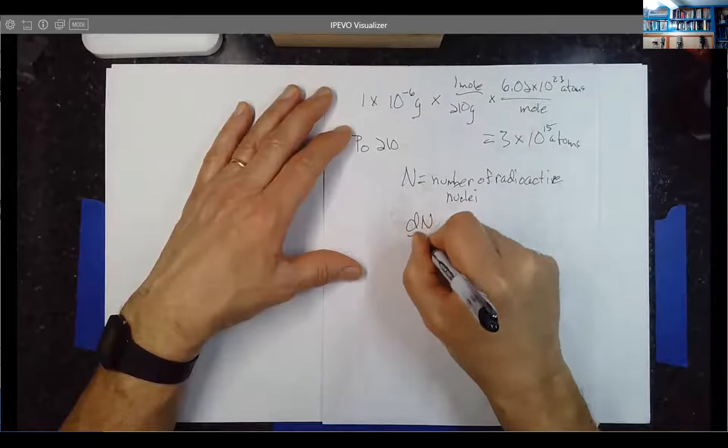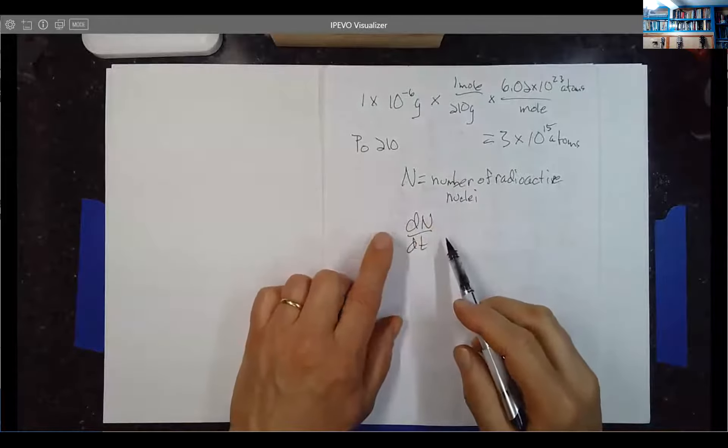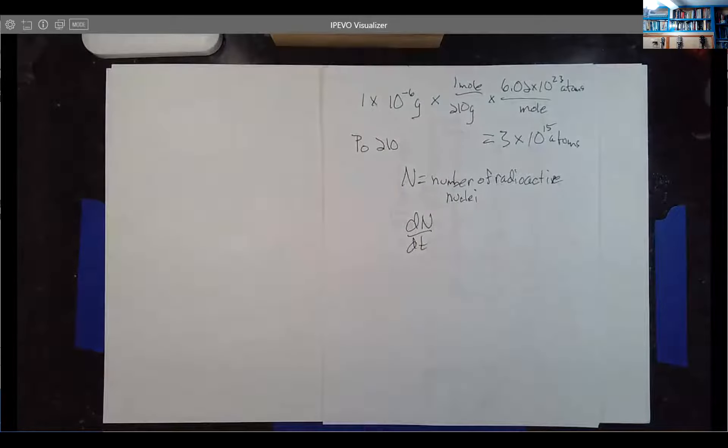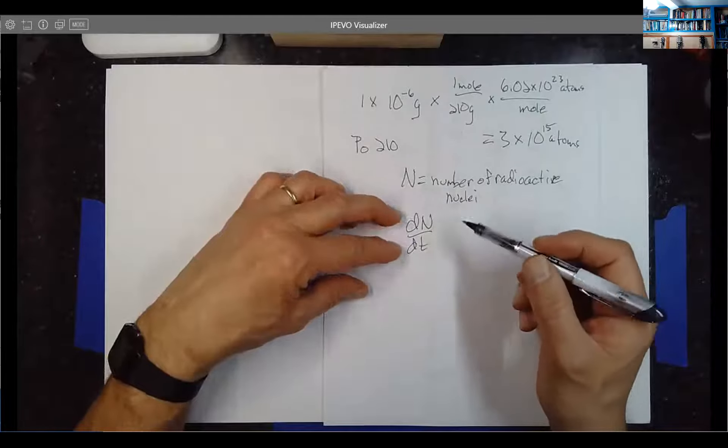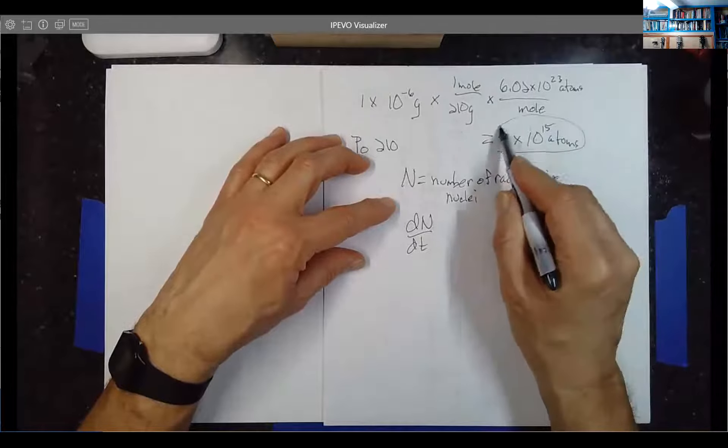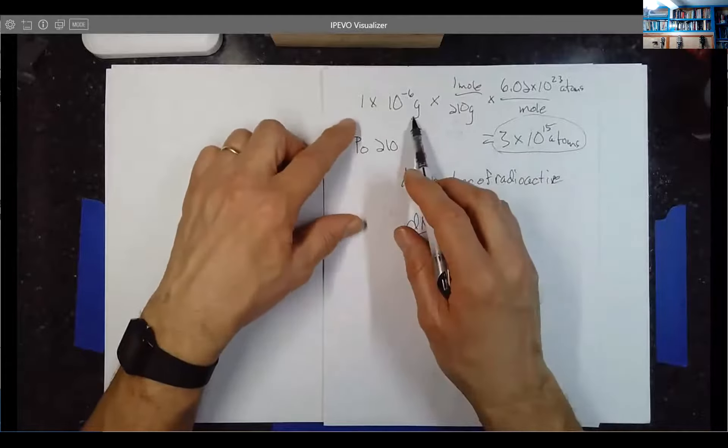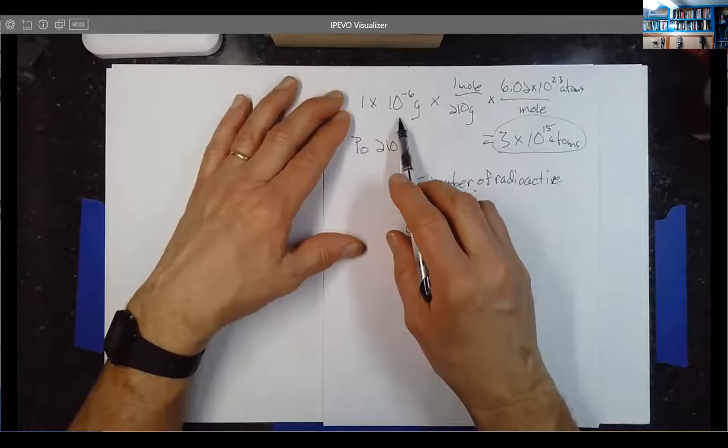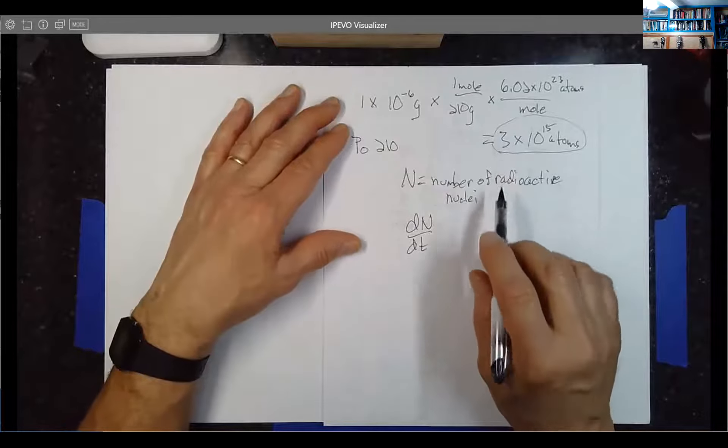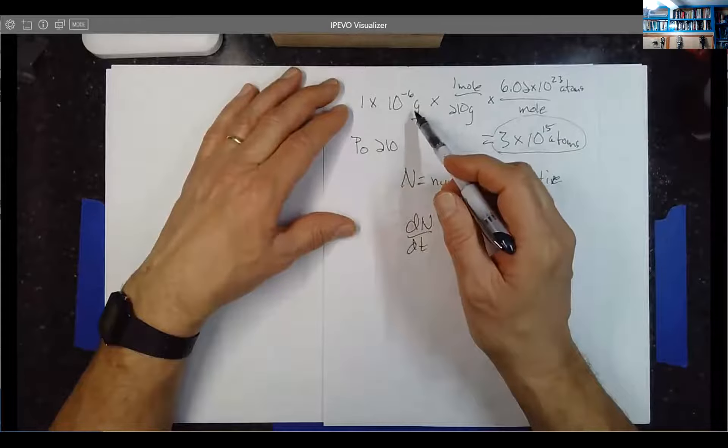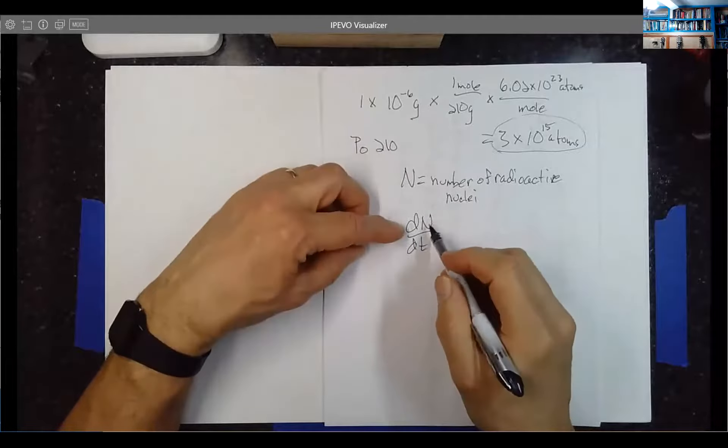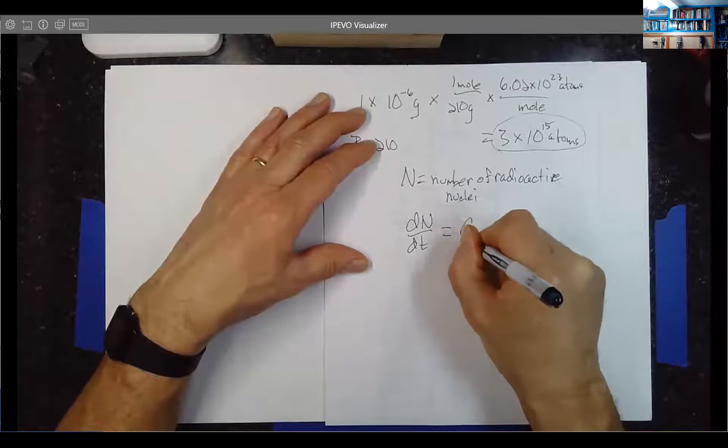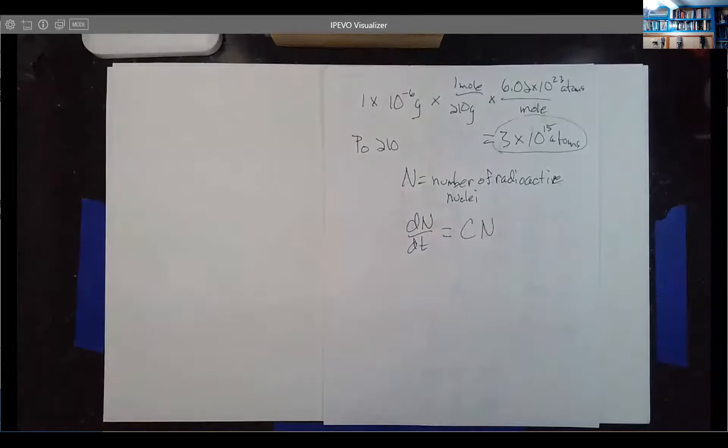dN/dt is going to be the number of nuclei that decay per unit time. And it turns out that if you have twice as many nuclei, you have twice as many of them decaying per unit time. This is especially true when you've got large numbers of nuclei, which it doesn't take very much to have a large number of them. We could have gone to a trillionth of a gram, and we'd still have 3 trillion of those things. dN/dt ends up being proportional to the number of nuclei that you happen to have.